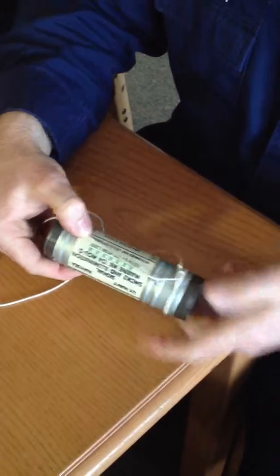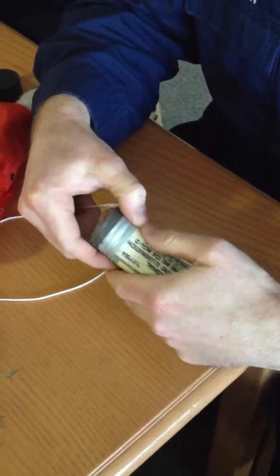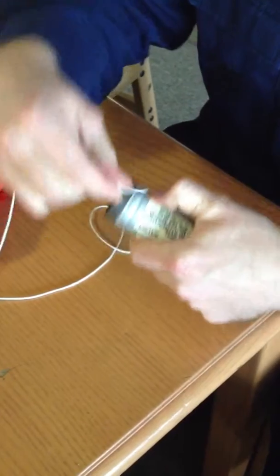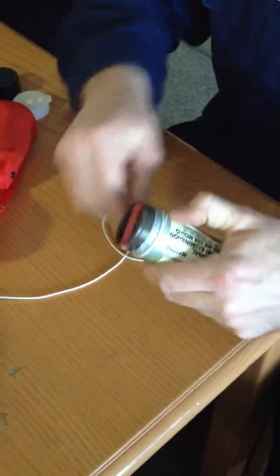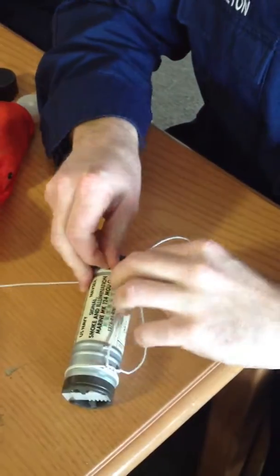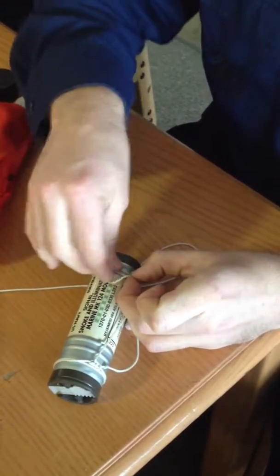So then you stretch this across. I back it out so there's a little bit of slack. Pinch it with my thumb, and then wrap this two times. And then you do the same thing over here. But this gets a little more difficult.